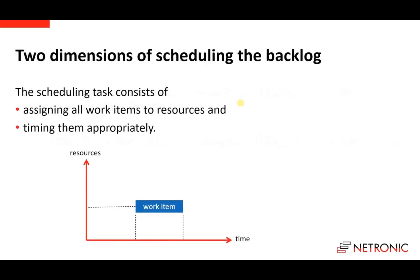When we schedule a backlog, the scheduling task consists of two different steps. First, we have to assign all work items to an appropriate resource, and then we have to time them appropriately. This means we have to find for each work item the proper position in the diagram with respect to its position in time and with respect to an appropriate resource.